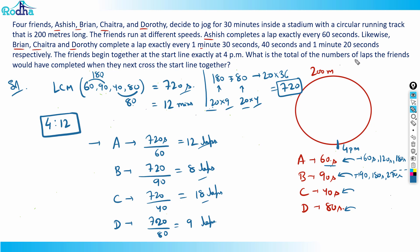The question asks what is the total number of laps before they next cross the starting line together. Just add these values: 12 plus 8 is 20, plus 18 is 38, plus 9 is 47. So 47 is the answer.